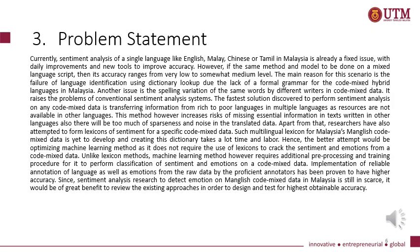The problem statement of this paper is: sentiment analysis for a single language like English, Malay, Chinese, or Tamil in Malaysia is already a fixed issue with daily improvements and new tools to improve accuracy. However, if the same method or model is applied to a mixed language script, its accuracy ranges from very low to somewhat medium level. The main reason is the failure of language identification using dictionary lookup, due to the lack of a formal grammar for code mixed hybrid languages in Malaysia. Another issue is spelling variation for the same words by different writers in code mixed data. The fastest solution discovered is transferring information from rich to poor languages across multiple languages, since resources are not available in other languages. This method, however, increases the risk of mixing essential information in texts written in other languages.